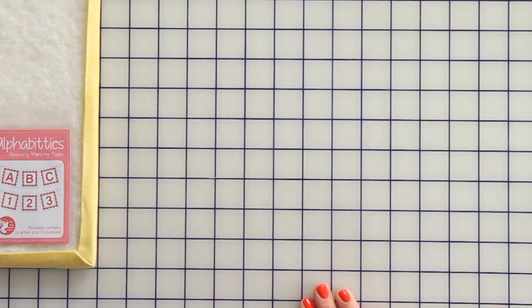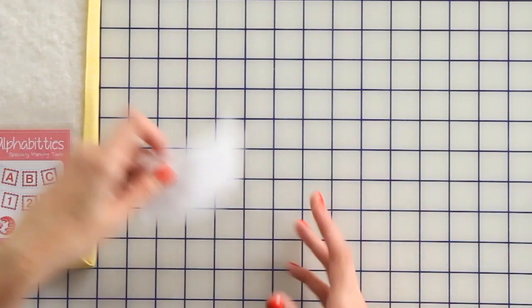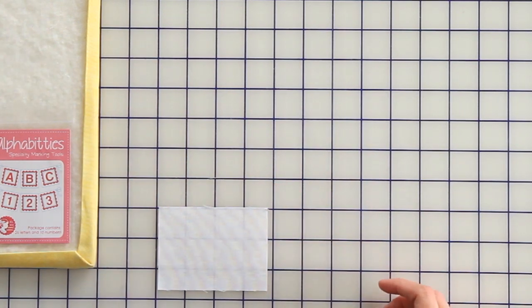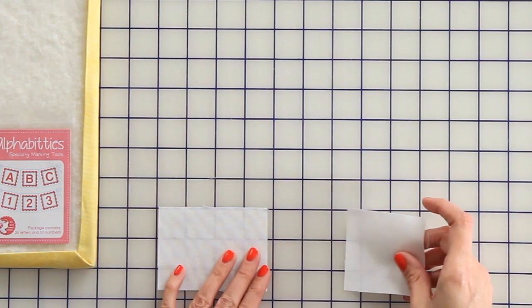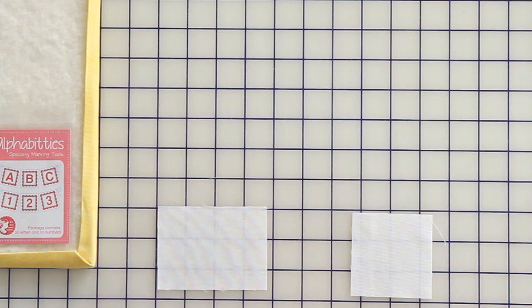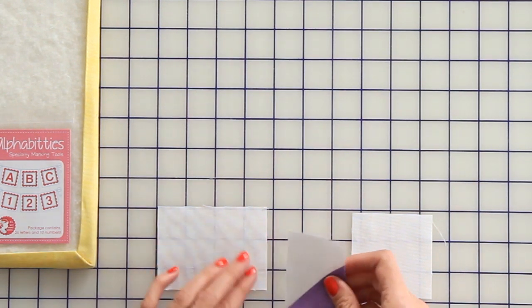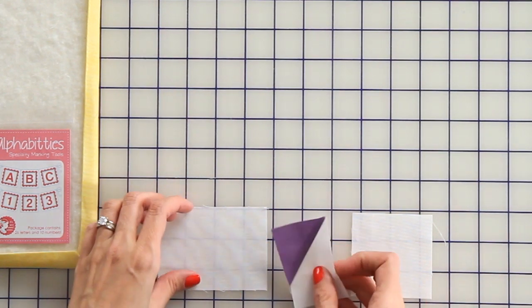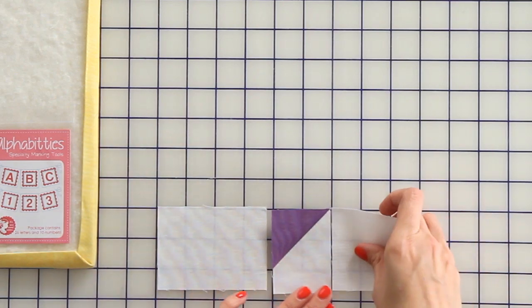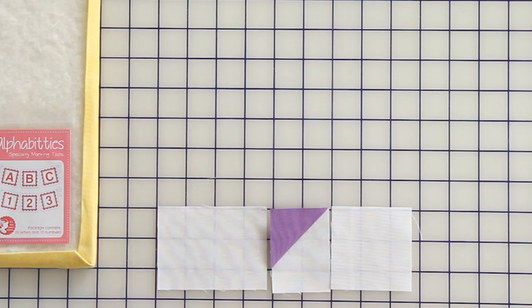And then we need to make our basket bottom unit. We're going to use our remaining fabric A rectangle, our fabric C square, and our bottom basket base. Make sure you place it exactly like the pattern shows, and it will look like this.